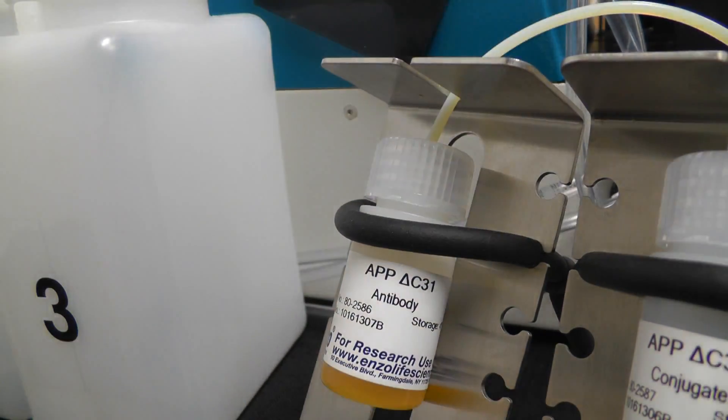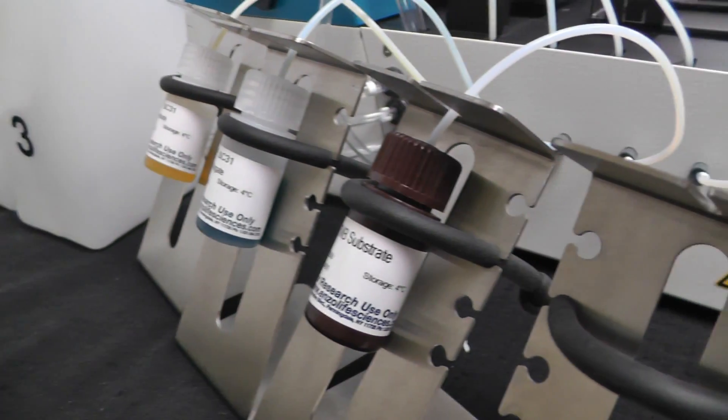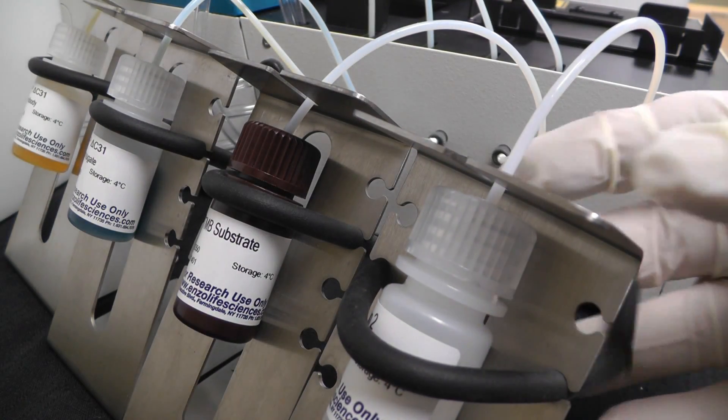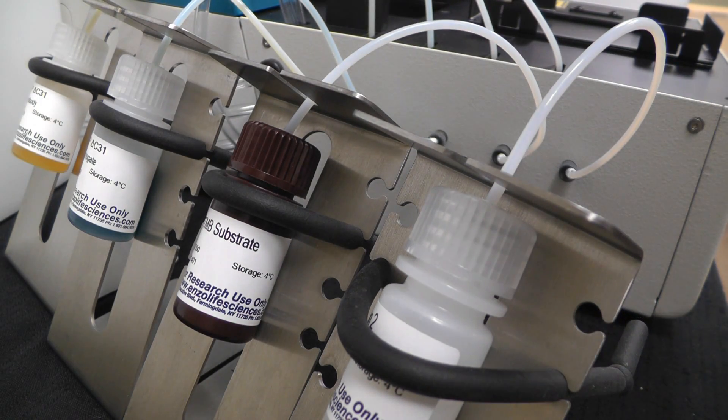We prepare the Crocodile Mini Workstation by adding all reagent bottles to dispensers 1-4. This includes the conjugate, antibody, substrate, and stop solution.